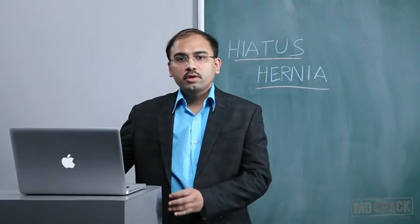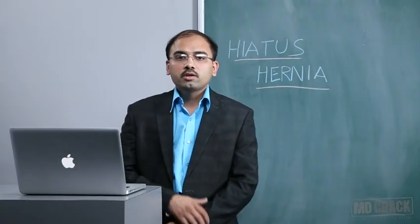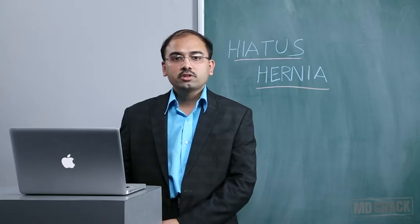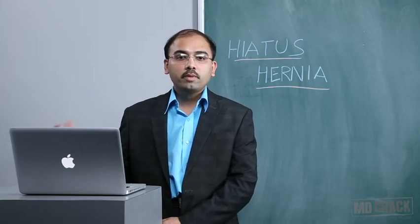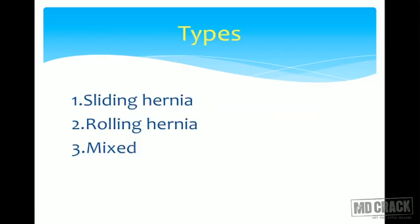Hello friends, today we are going to discuss an important topic of hiatus hernia which has got multimodal presentations and multimodal pathoetiology. It is the herniation of the gastroesophageal junction, stomach, and esophagus through the esophageal hiatus into the thoracic cavity — for practical purposes, in the posterior mediastinum.